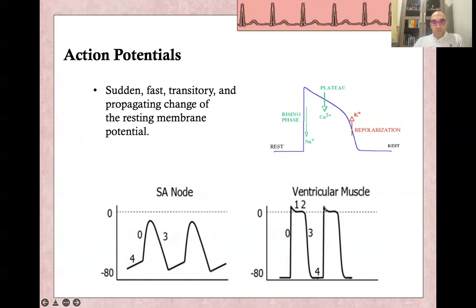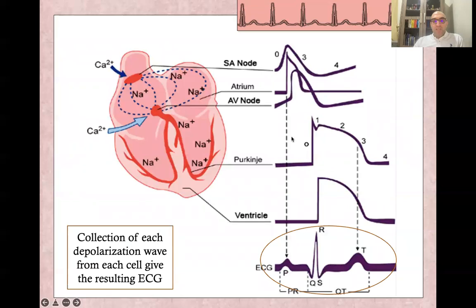Each cell in the heart has a specific action potential — for example, this one is for the AV node, and this one is for the ventricular muscle. If we collect all depolarization and repolarization for each muscle cell in the heart — including the SA node, atrial cells, AV node, Purkinje fibers, and ventricle — the resulting combined action potentials produce the ECG shape we know: the P wave, QRS complex, and T wave.